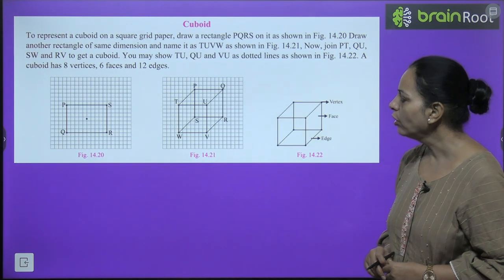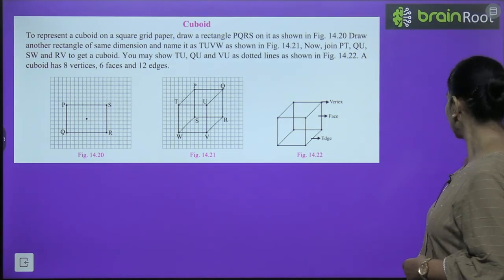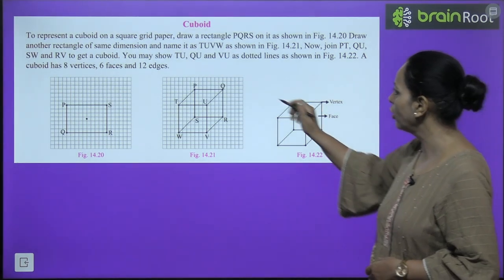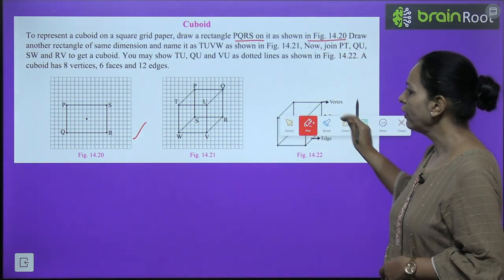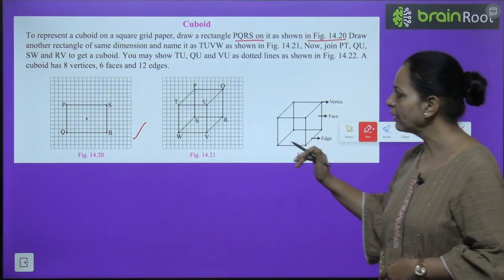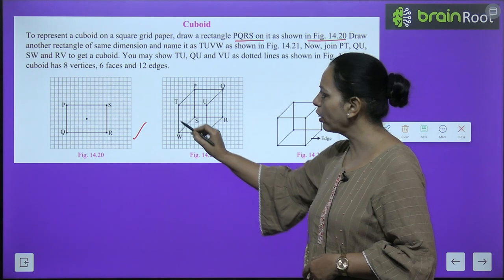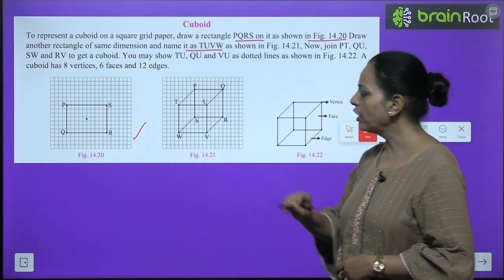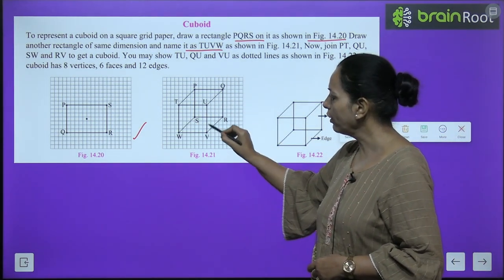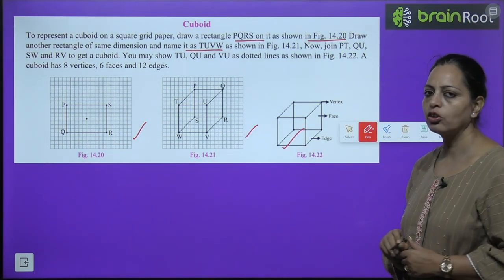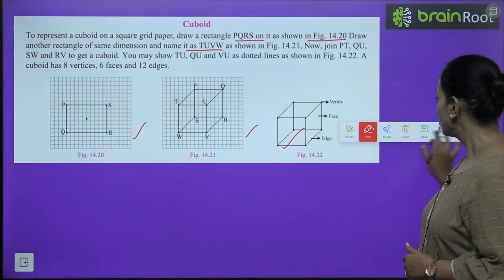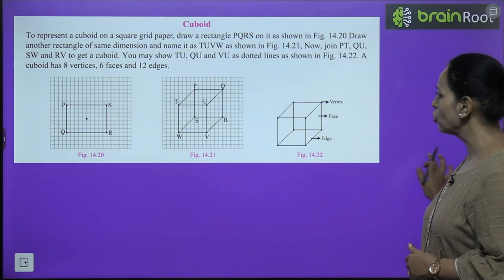Similarly, for a cuboid: To represent a cuboid on a square grid paper, we will draw a rectangle PQRS. Then draw another rectangle of the same dimension. Then join them. So this is the cuboid. I hope this is clear to you.